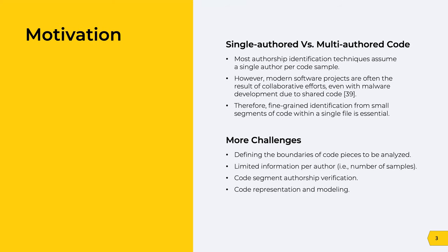Most existing code authorship identification techniques assume a single author per code sample, an assumption that doesn't always hold in real-life applications. For example, modern software projects are often a result of collaborative efforts and teamwork. This is also true in the malware development community. Addressing a multi-author identification process adds more complications and challenges, such as defining the size of code segments to be analyzed for attribution. The code segment should be sufficient in size to be accurately attributed and not very large to minimize the probability of being written by multiple programmers.